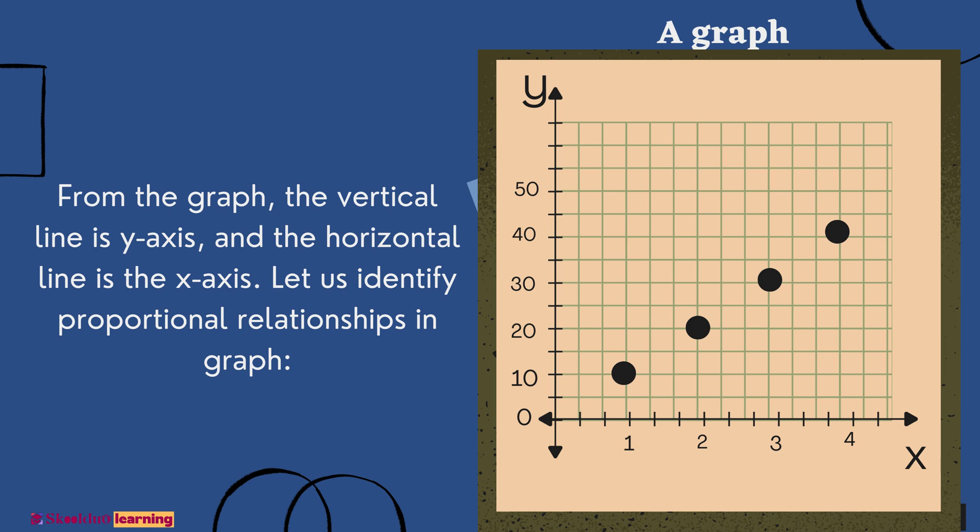From the graph, the vertical line is Y-axis, and the horizontal line is the X-axis. Let us identify Proportional Relationships in graph.